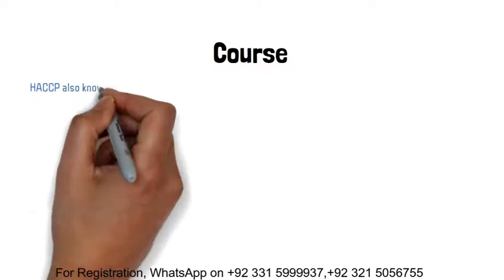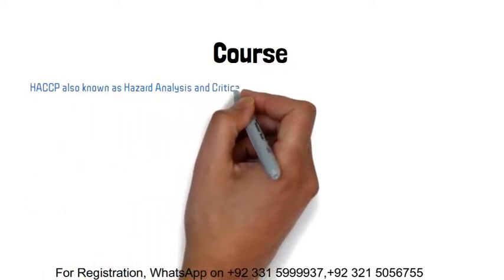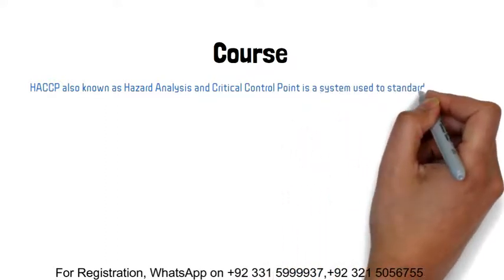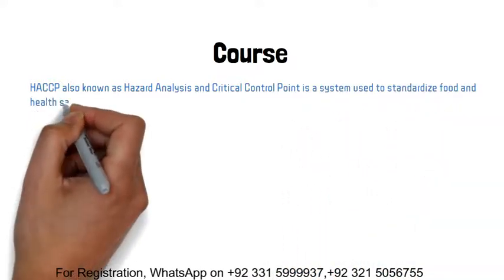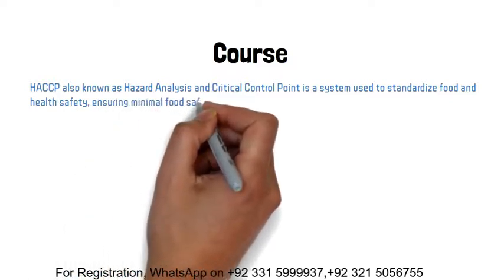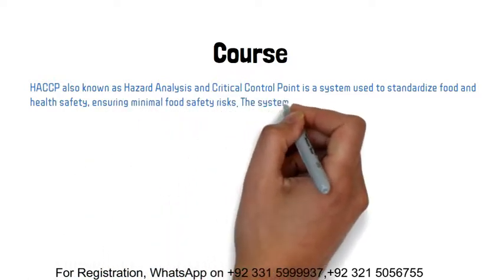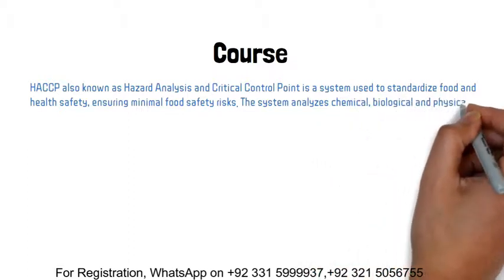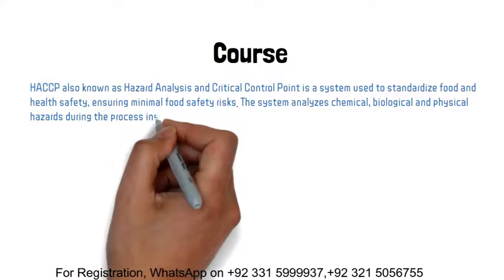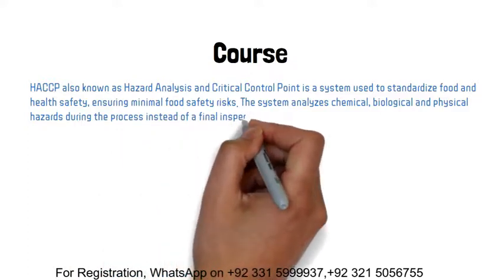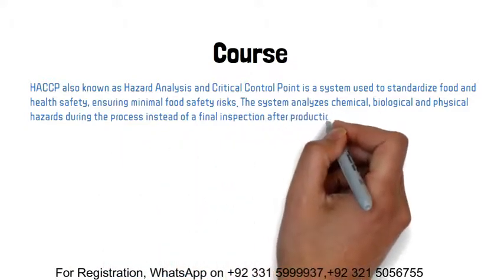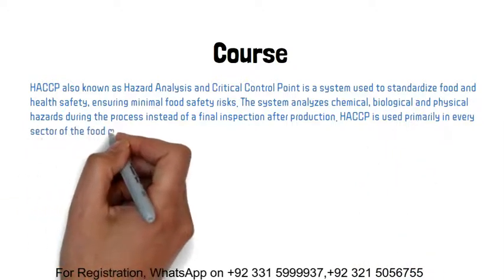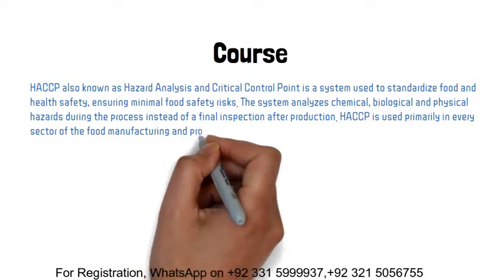HACCP, also known as Hazard Analysis and Critical Control Point, is a system used to standardize food and health safety, ensuring minimal food safety risks. The system analyzes chemical, biological and physical hazards during the process instead of a final inspection after production. HACCP is used primarily in every sector of the food manufacturing and processing industry.